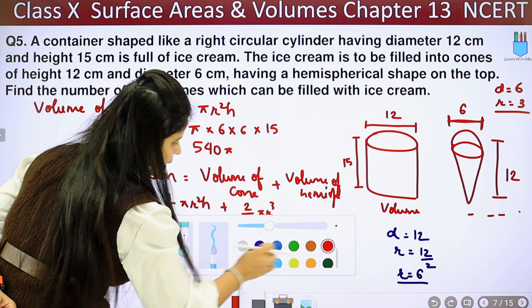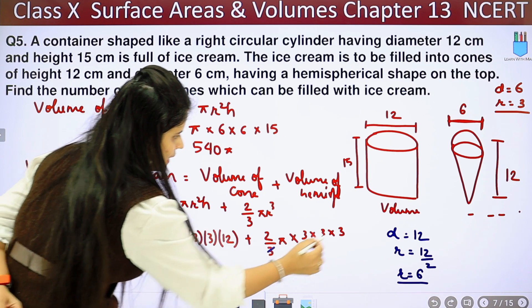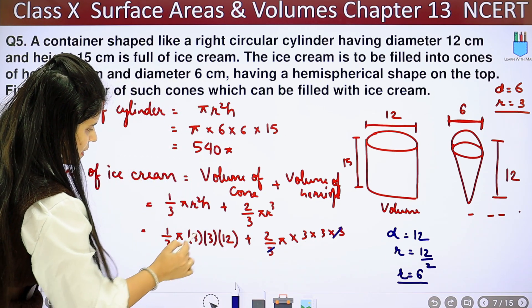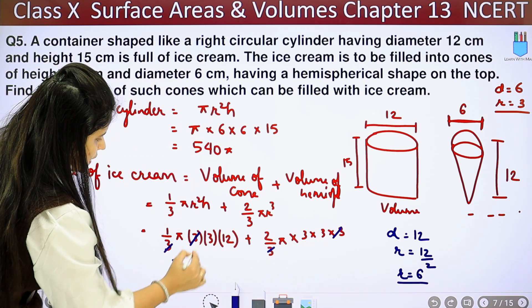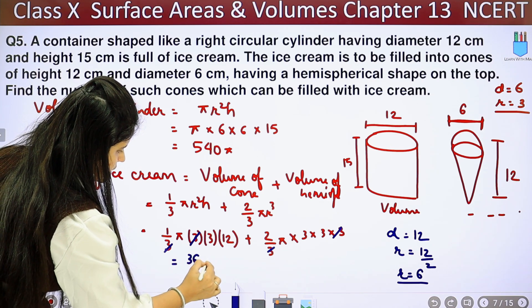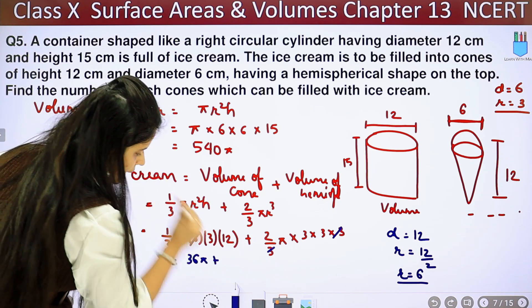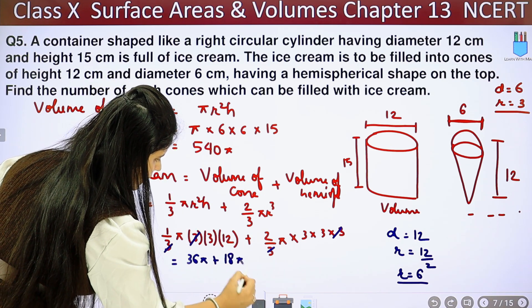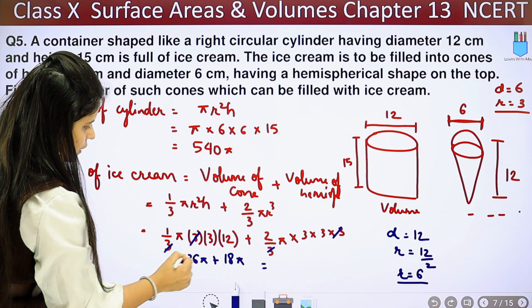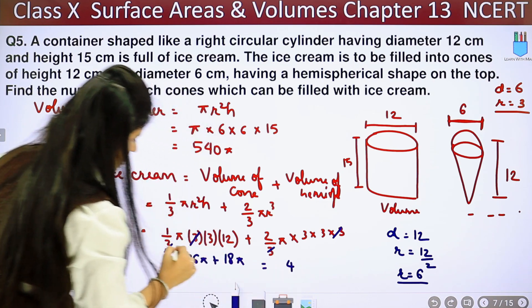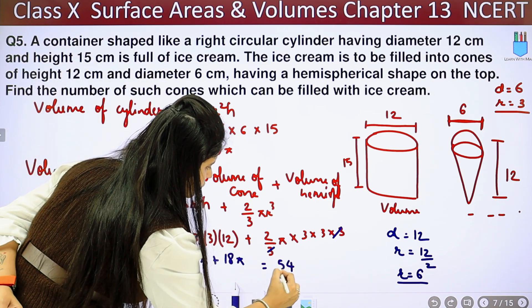Plus 2/3 π as it is, r³. If we talk about the radius of hemisphere, the cone's radius is 3, the hemisphere's radius is also 3. So 3 × 3 × 3. See here, 3 from 3 has cancelled out, here also 3 from 3 has cancelled out. So here we have 12 × 3 is 36, 36π plus here, 3³ is 27, 27 × 2 is 54. Wait, 3 × 3 is 9, 9 × 2 is 18. So 18π. So you get 36 + 18 = 54π.